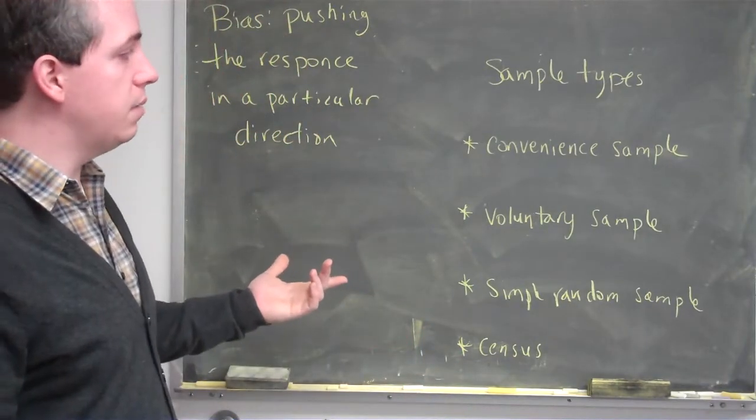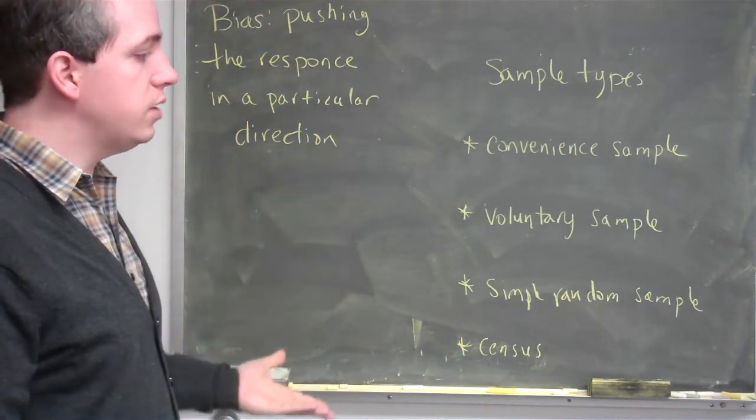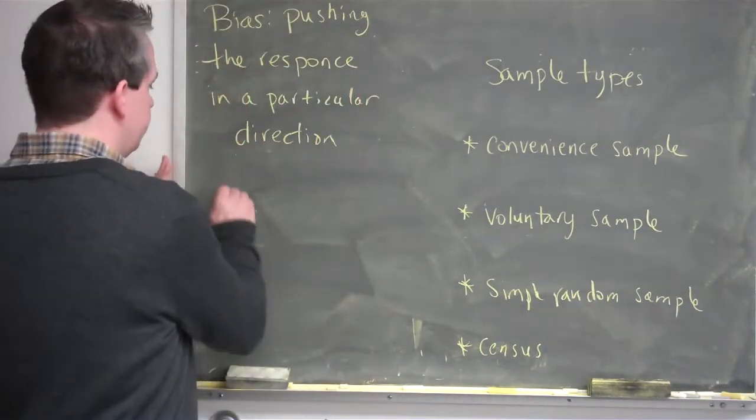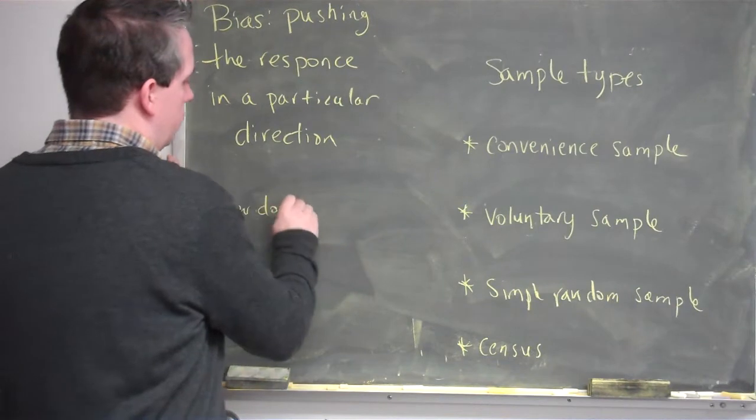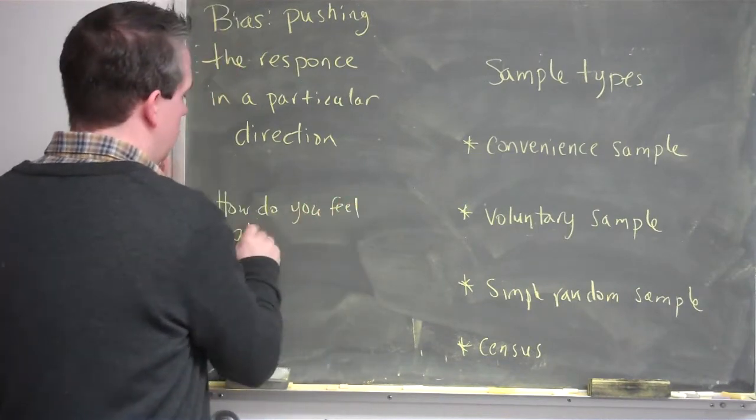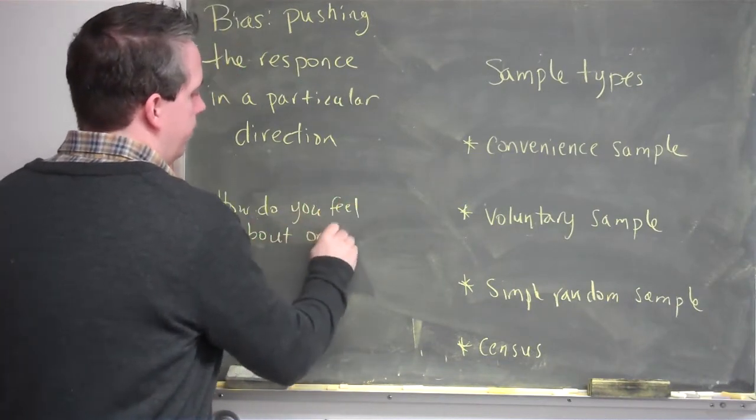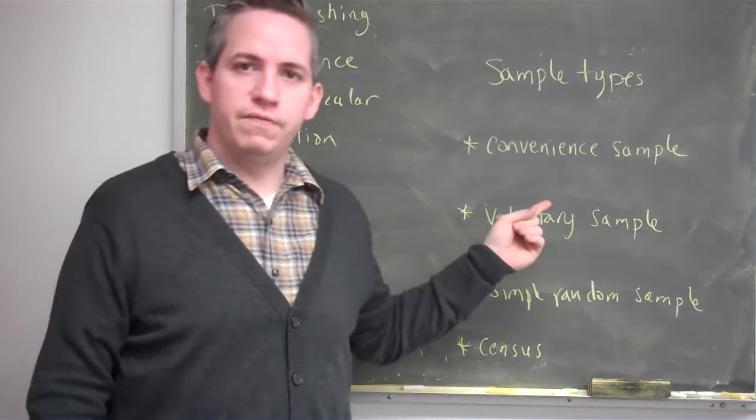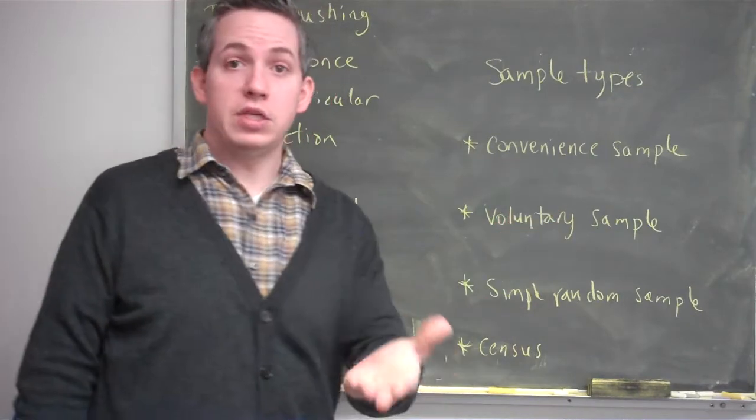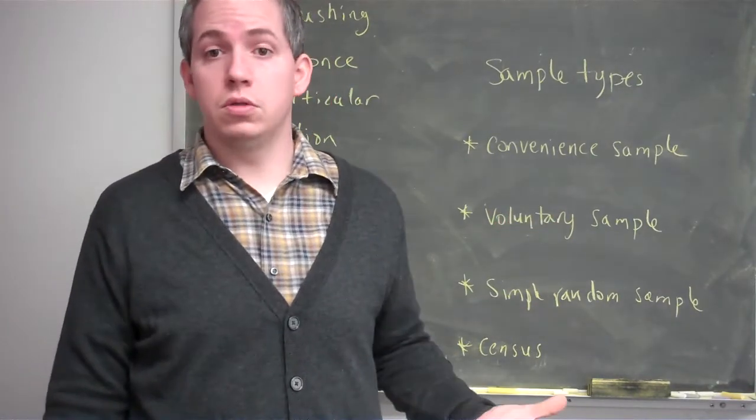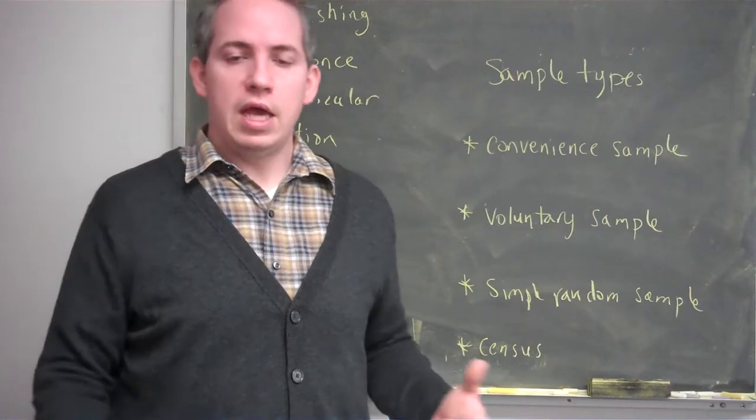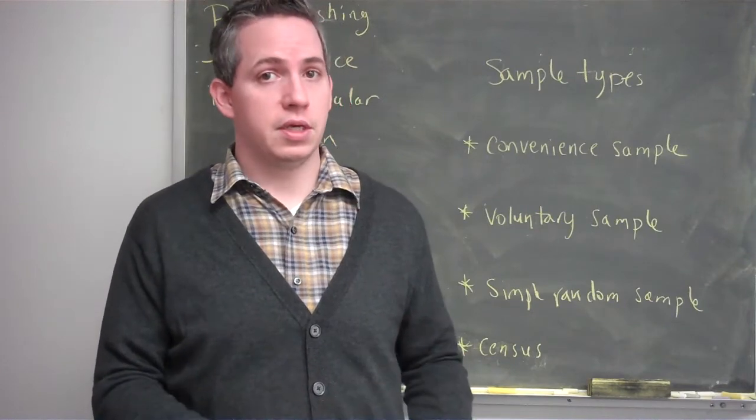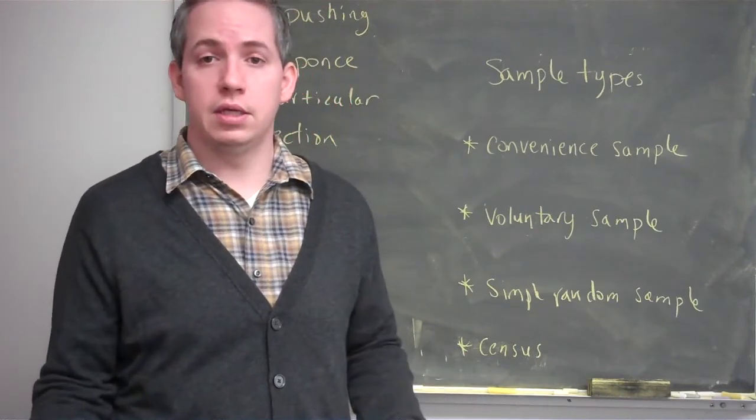For instance, suppose I'm talking to Wayne State University students and I want to know how they feel about online courses. If I asked a convenience sample, maybe I just ask all of my online course students how they feel about online courses. It's convenient, which means they're easy to get to. If they're easy to get to, they must have something in common. In this case, they would all be taking an online course.